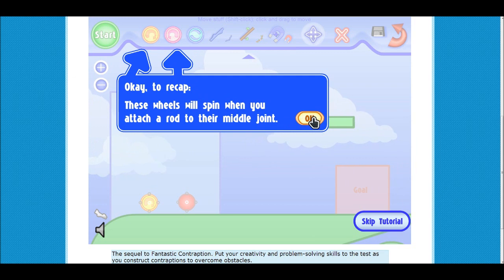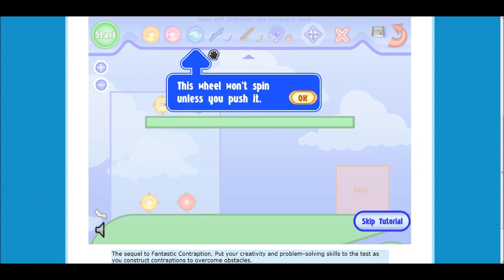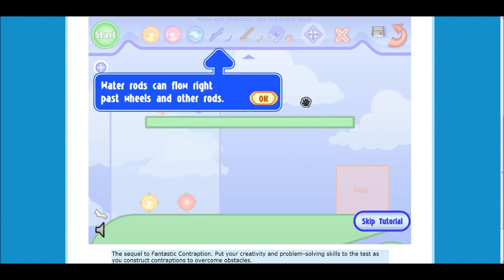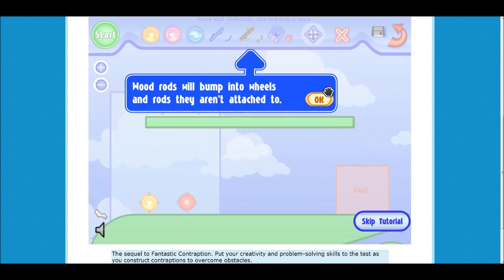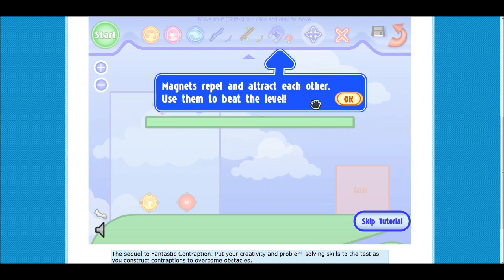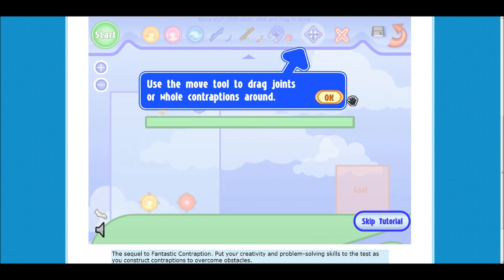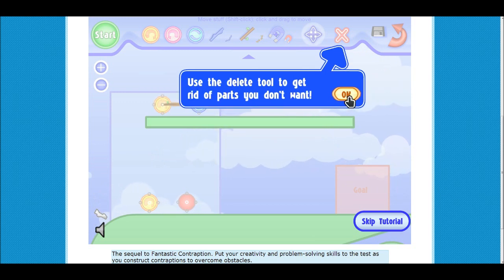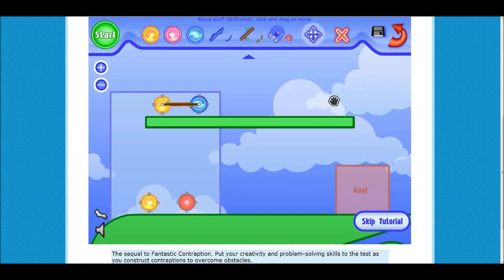The wheels will spin when you attach the rods to their middle joint. This wheel won't spin unless you push it. Water rods can flow right past wheels and rods. The wooden ones will bump into stuff. Magnets will attract and repel each other. That moves whole contraptions.